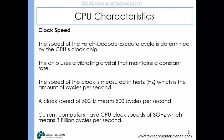Current modern day CPUs are around 3 gigahertz, meaning 3 billion cycles per second. 3 billion instructions can be processed every second, which is quite phenomenal.